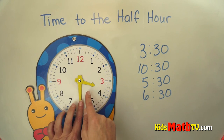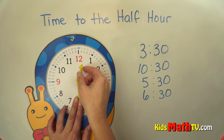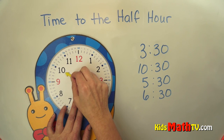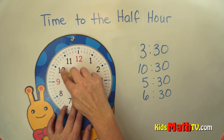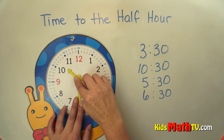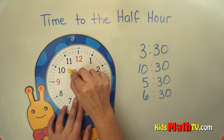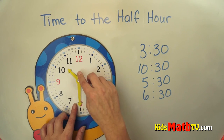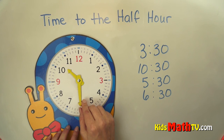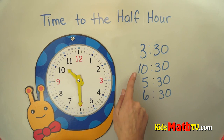How about 10:30? The minute hand is still going to be on the 30, and we're at the 10, but it's halfway between 10 and 11 o'clock. So the hour hand is halfway between 10 and 11, and the minute hand is on the 30. That's 10:30 or half past 10.